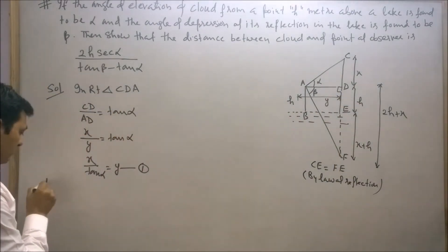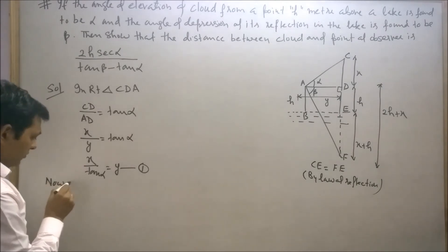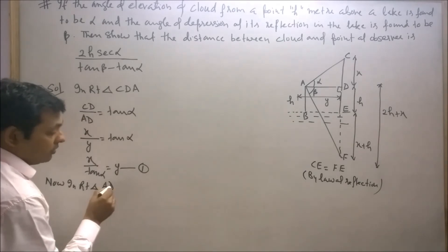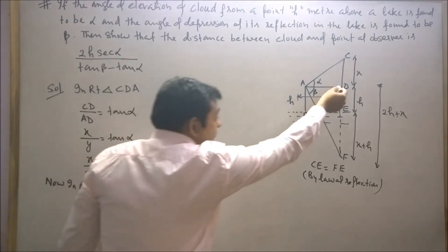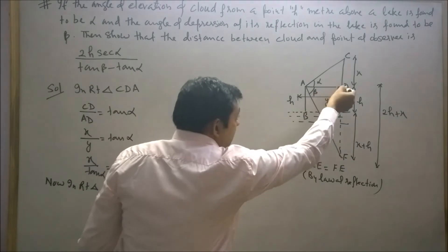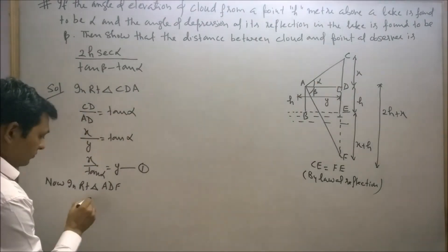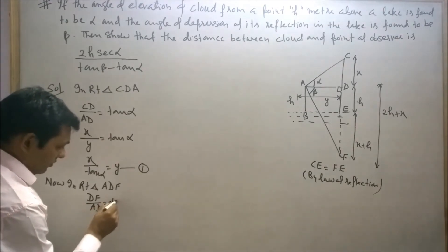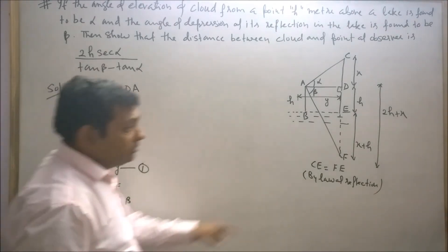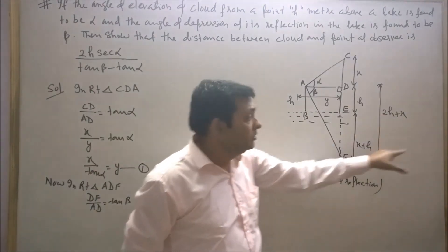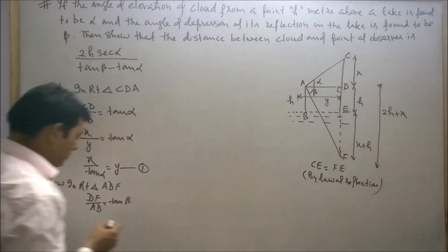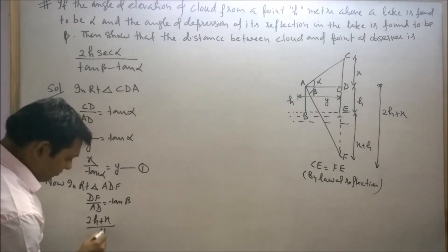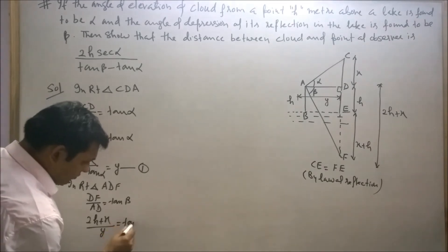Now consider right angle triangle ADF. In right triangle ADF, DF upon AD equals tan(β). DF is equal to 2H plus X and AD is Y. Therefore 2H plus X upon Y equals tan(β).